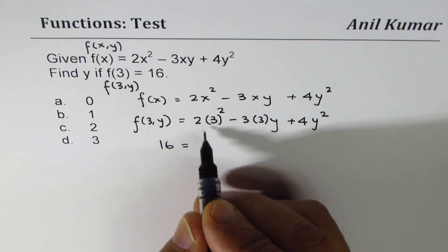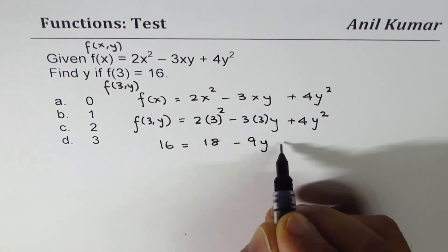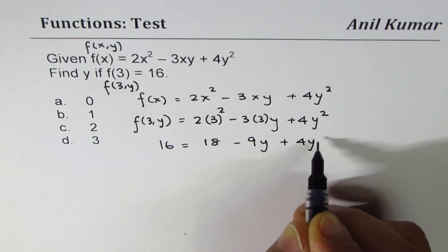3² is 9, times 2 is 18, minus 3 times 3 is 9, so 9y plus 4y².